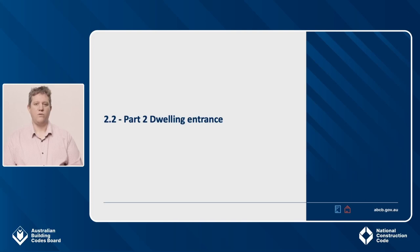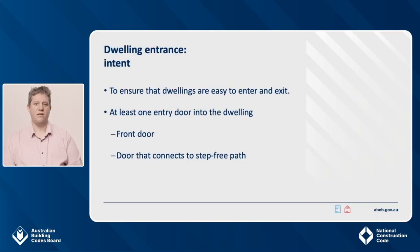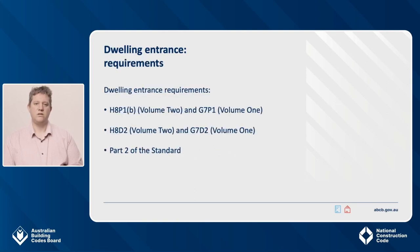We'll now move on to the dwelling entrance provisions in Part 2 of the standard. The intent of this requirement is for dwellings to be easy to enter and exit, including for older people and those with a mobility-related disability. The standard requires that at least one entry door into the dwelling needs to meet the requirements. This could be the front door or another door that connects to the step-free path, for example from the garage. Dwelling entrance is covered by H8P1B in NCC Volume 2 and G7P1 in NCC Volume 1, H8D2 in NCC Volume 2 and G7D2 in NCC Volume 1, and Part 2 of the standard.